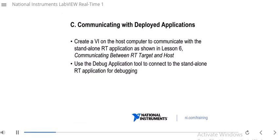If we needed to debug the RT EXE — for example, let's say we deployed it to our CompactRIO and it's running there as a standalone startup RT application — if things aren't working exactly correctly and we wanted to figure out what's going on, there's something called the debug application tool that we can use to actually connect to that standalone RT application and debug it.